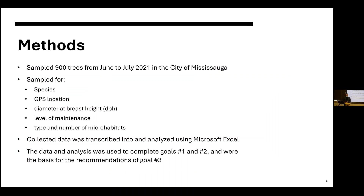For my methods, I sampled 900 trees from June to July of 2021 in the city of Mississauga. I sampled for species, GPS location, diameter at breast height, level of maintenance, and the type and number of microhabitats. The species sampled were restricted to honey locust, Norway maple, red maple, red oak, silver maple, and sugar maple. The different levels of maintenance were park trees that underwent the lowest amount of maintenance on average, street trees that underwent a moderate amount of maintenance, and trees under wires or hydro lines that underwent the largest amount of maintenance on average.